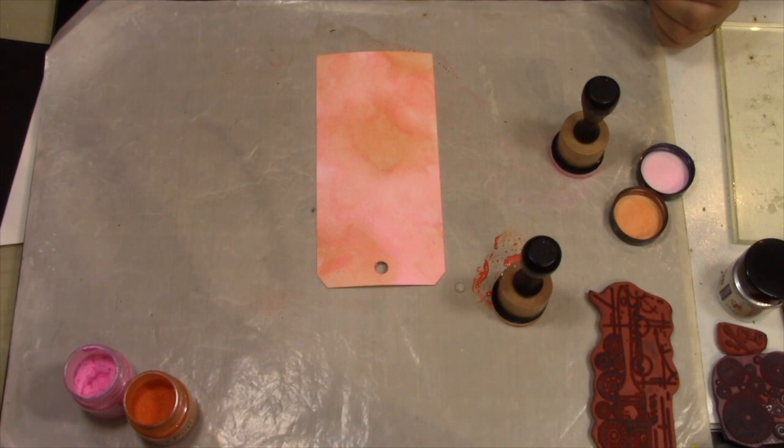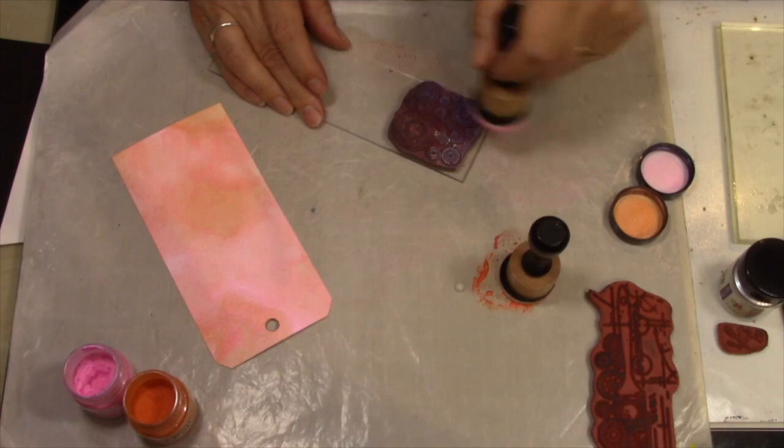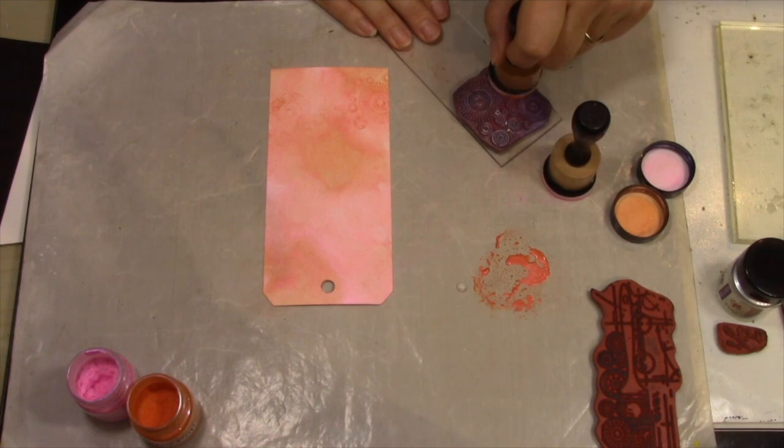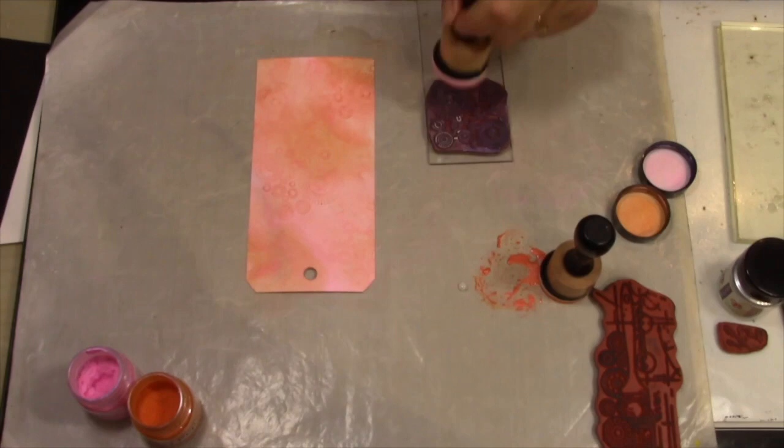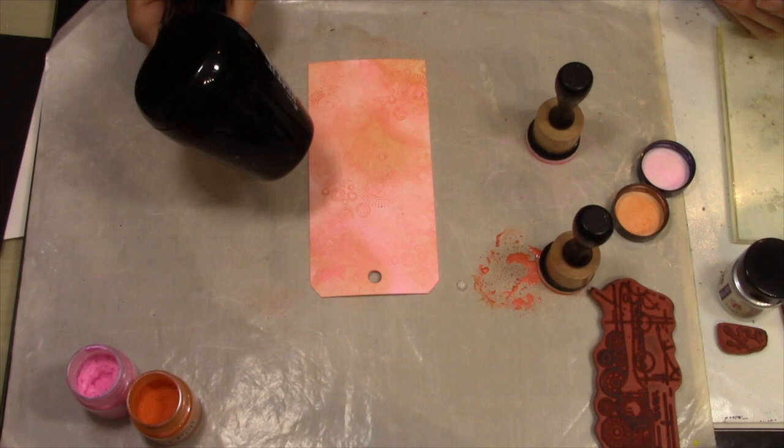You might notice I've speeded the video up a bit because you can get the general idea. Now I'm using the circles from the Collector's Edition, using the luscious that's still on the sponges to ink up my stamp. Then I'm double stamping it - one impression and then another. This gives a lovely background effect, making a nice subtle background. I'll finish there and dry that off.